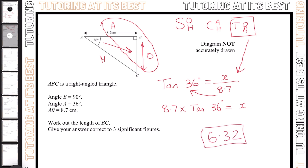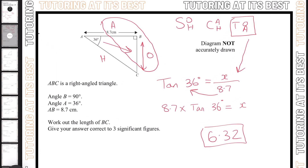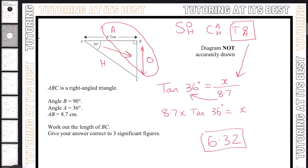So now we know the length of BC is 6.32. Let's recap once more: step one, we label our sides; step two, we select whether it's SOH, CAH, or TOA; and step three, we make x the subject.